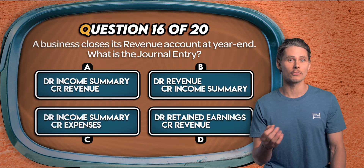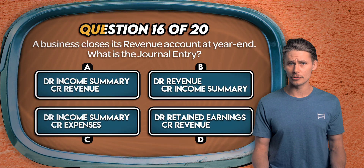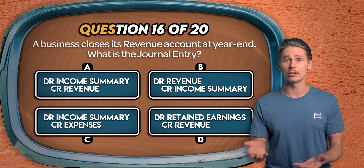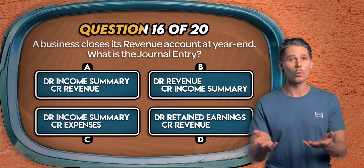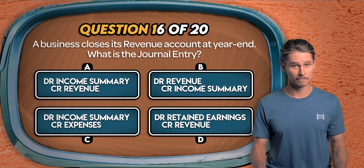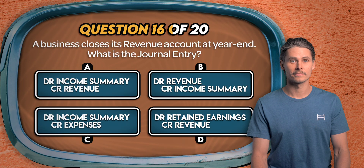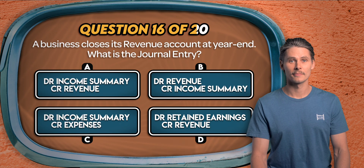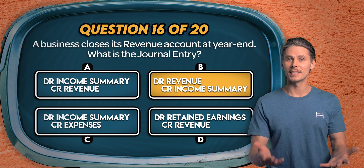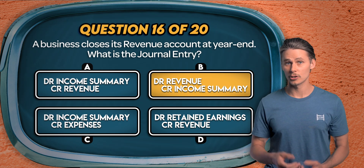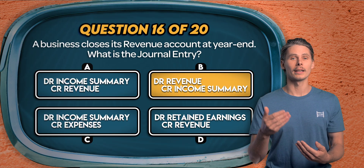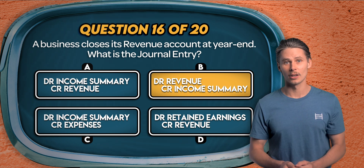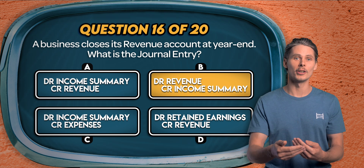Question 16. A business closes its revenue account at year end. What is the journal entry? Is it debit income summary credit revenue, debit revenue credit income summary, debit income summary credit expenses, or debit retained earnings credit revenue? The answer is B. Revenue is a normal credit account, so we debit it to bring it down to zero, and we credit the income summary account. This helps us calculate net profit for the period before closing it to retained earnings in the balance sheet.